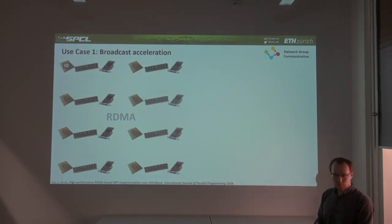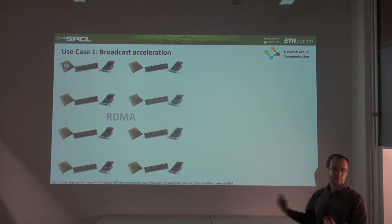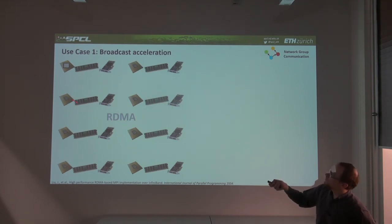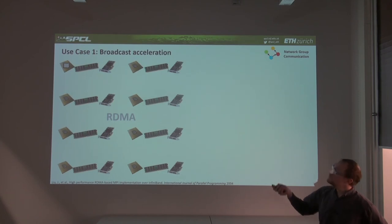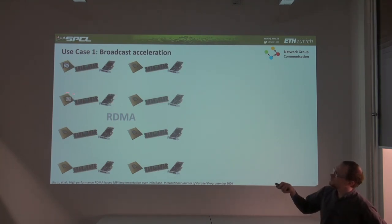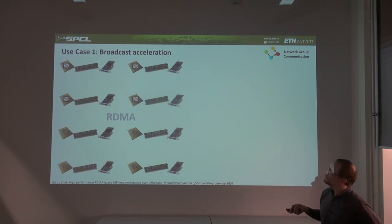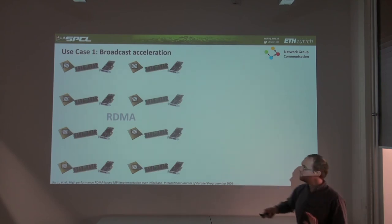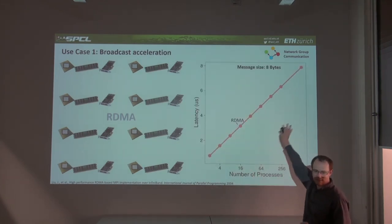Broadcast is an MPI group communication primitive. The idea is to distribute data as fast as possible to all other nodes. Here we have eight nodes, each with a CPU, memory, and NIC. Broadcast is typically implemented as a binary tree: send to a neighbor, those two nodes forward to others, and so on. In RDMA, we measure latency in microseconds versus number of processes for an 8-byte message.